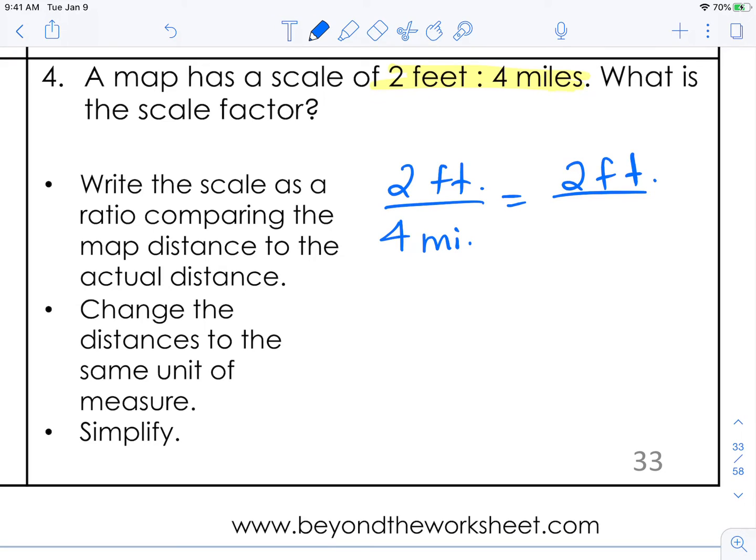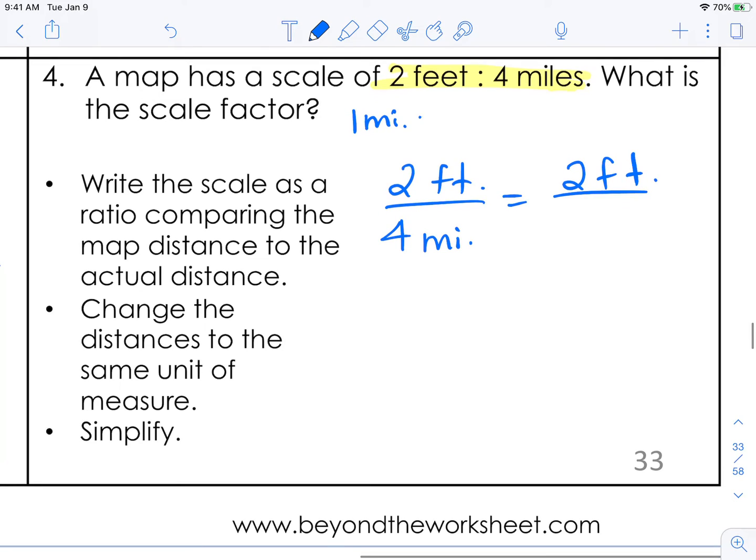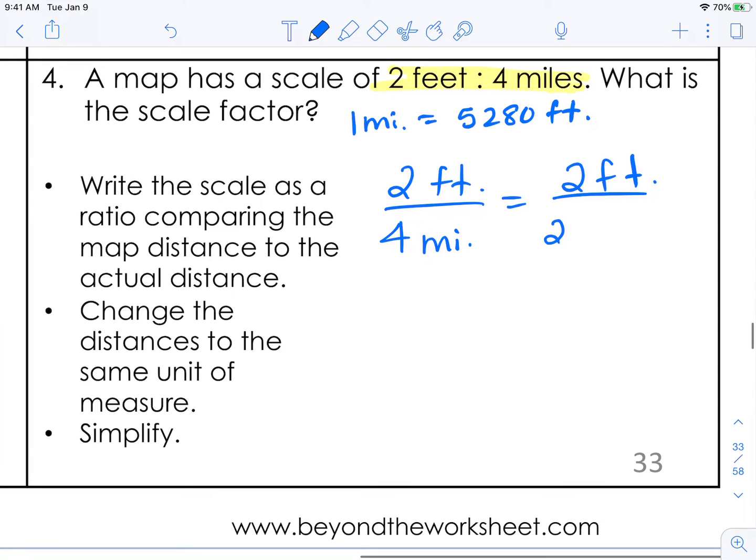And then if you know your metric measurement conversions. Then you know that 1 mile. Let me write this up here. 1 mile is equal to 5,280 feet. So 4 miles. We're going to take 5,280 times 4. And we get 21,120 feet.